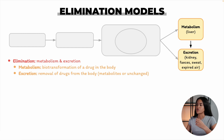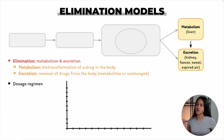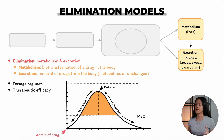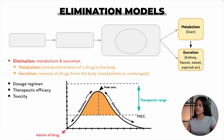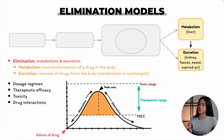The elimination process directly impacts several important aspects of drug therapy. First, the dosage regimen — how often and in what amounts a drug is administered. Second, therapeutic efficacy, ensuring that drug levels remain within a therapeutic range. Third, toxicity — preventing drug accumulation to toxic levels. And finally, understanding how different drugs may interact or affect each other's elimination, so drug interactions.